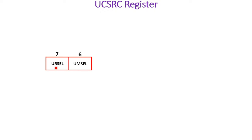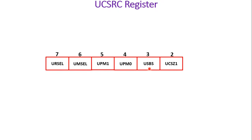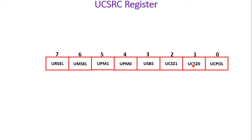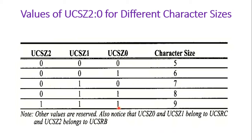In the UCSRC register, we have URSEL, UMSEL, UPM1, UPM0, USBS, UCSZ1, UCSZ0, and UCPOL. We are going to make the URSEL bit 1 because we have to use the UCSRC register. Then we also make UCSZ1 and UCSZ0 both 1 because we are going to receive 8 bits of data. The USBS bit is 0 by default, so no need to change that. Setting UCSZ1 and UCSZ0 to 1 in the UCSRC register ensures that 8-bit characters will be received.